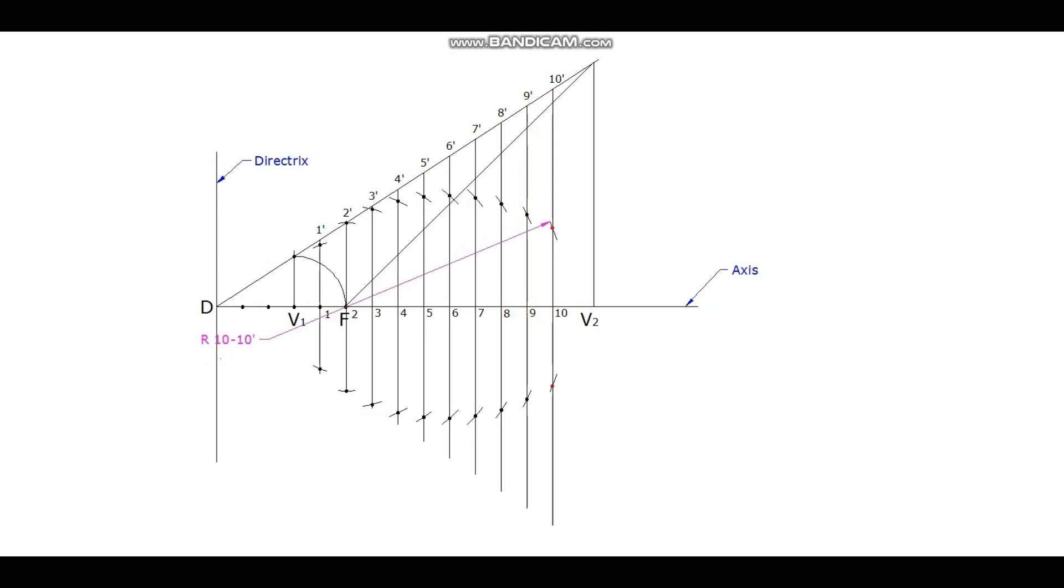10, 10 dash, points on both the sides. If these points are insufficient to trace the path of the ellipse we can further increase the points also. Measure 11, 11 dash, cut arcs on the same line on both the sides of the axis.